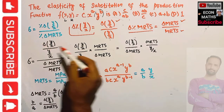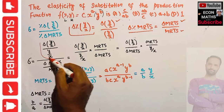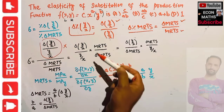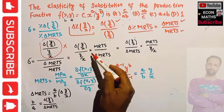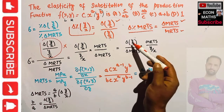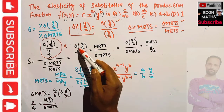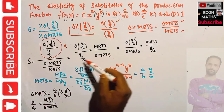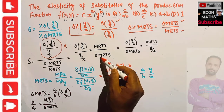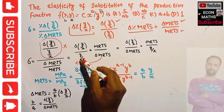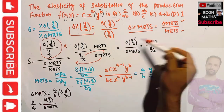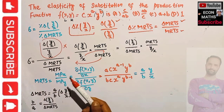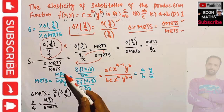I've written the numerator term first, then multiplied by the reciprocal of the denominator. This gives us: change in capital-labor ratio times initial MRTS, divided by change in MRTS times initial capital-labor ratio. Now, the marginal rate of technical substitution is simply the ratio of marginal product of X divided by marginal product of Y.